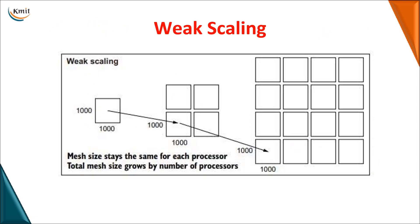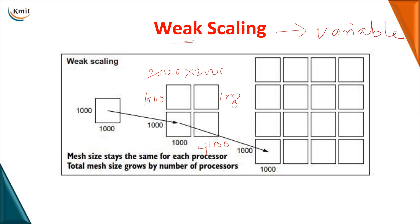The next metric is weak scaling. In weak scaling, the problem size is not fixed — it varies. Initially the problem size is 1000x1000. As you increase the number of processes to four, the problem size becomes 2000x2000; with 16 processors it becomes 4000x4000. However, the workload per processor remains constant at 1000x1000. So weak scaling is used when the problem size grows proportionally with the number of processes, and this is related to Gustafson-Barsis's law.